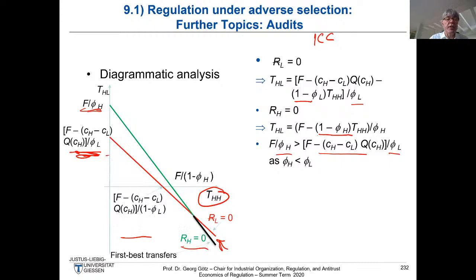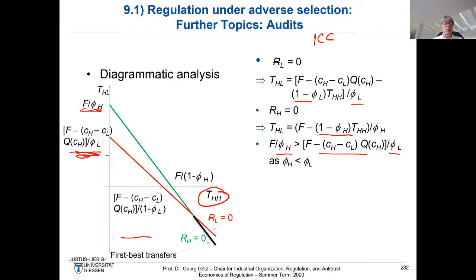There are infinitely many potential solutions — you can increase T_HH and decrease T_HL to get the same expected profit. The key result is that we get the first-best outcome: price equal to marginal cost and rent equal to zero, given these transfers. In the problem set you will be asked to calculate the intersection point, which represents the minimal transfers you have to pay.